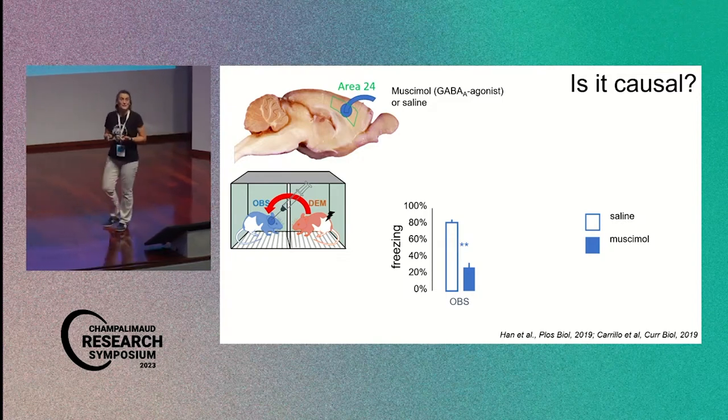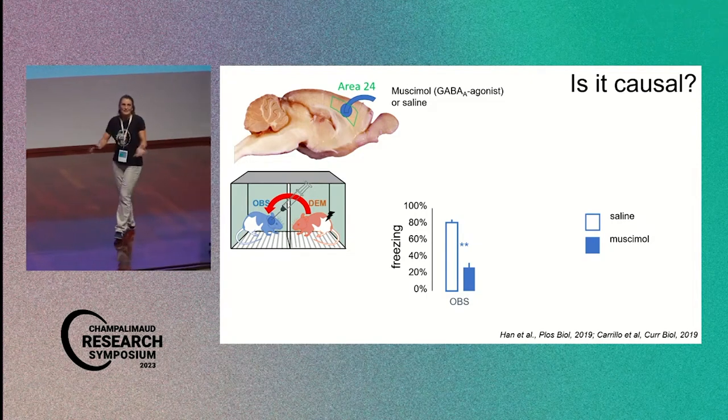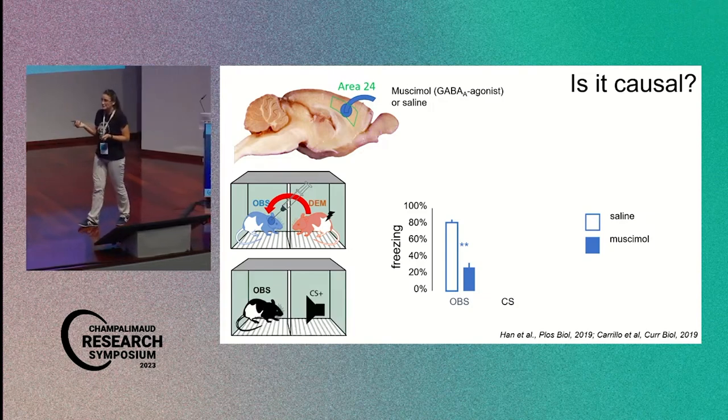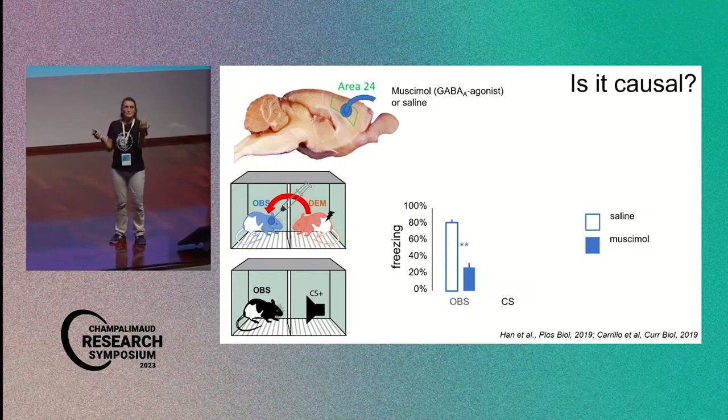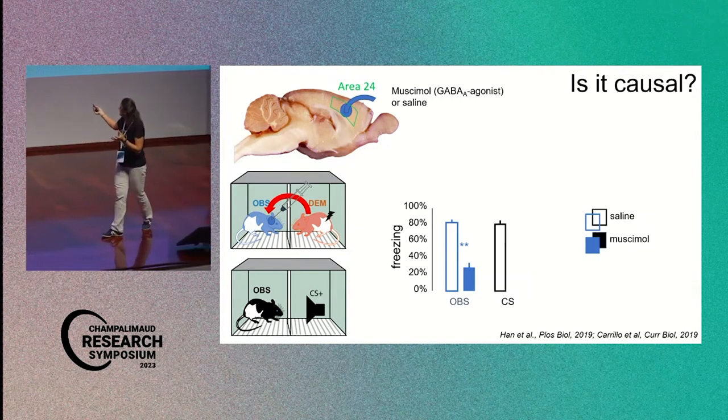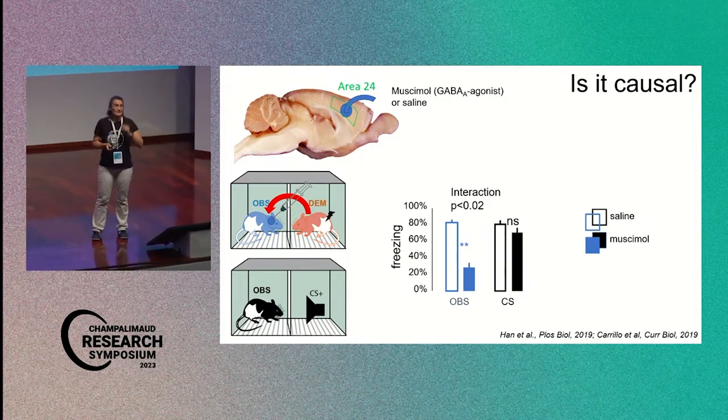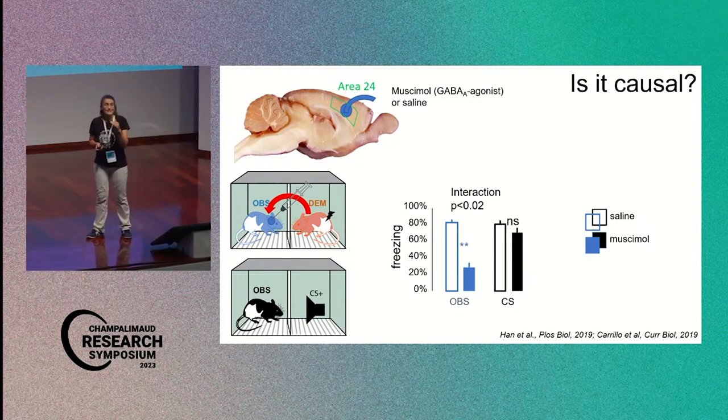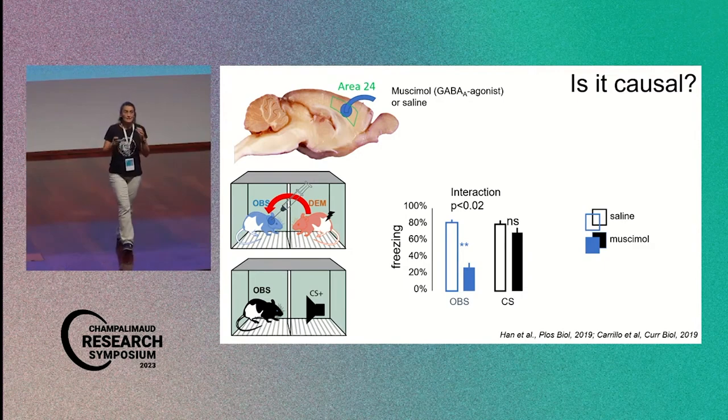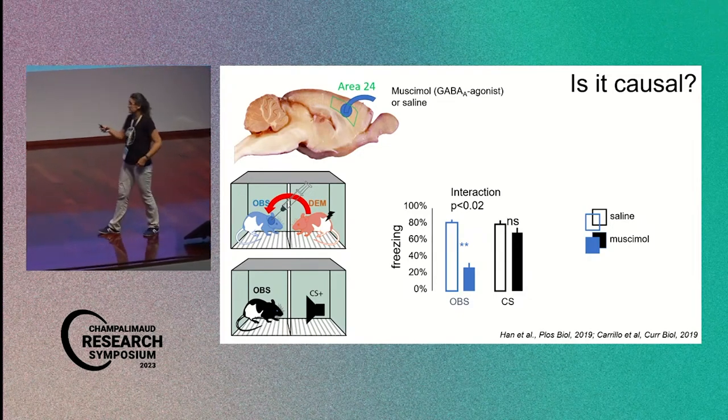But you should be critical and you should also be asking me, okay, but are you maybe just blocking the freezing behavior, like instead of the emotional contagion? Maybe the animal cannot freeze anymore, because we do know that the cingulate is involved also in motor output. So to control for that, we use, when we did the pre-exposure, if you remember when the observer experienced the shock the first time, we also played back a sound. So we conditioned the animal to this sound. And now we can just play back the sound, and you see in the dark black here, the animals injected with muscimol when we presented the CS, they froze as much as before. This suggests that the inhibition of the anterior cingulate cortex is not impairing the possibility of the animal to freeze when they are scared, but it more specifically impairs this transfer of emotional state, so they don't react as much to the distress of the other.